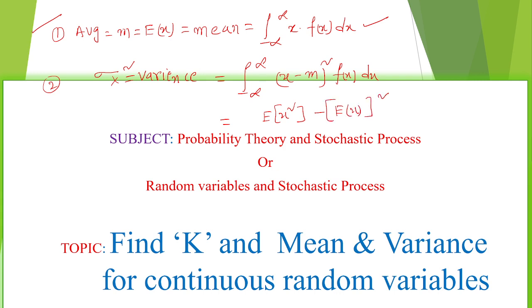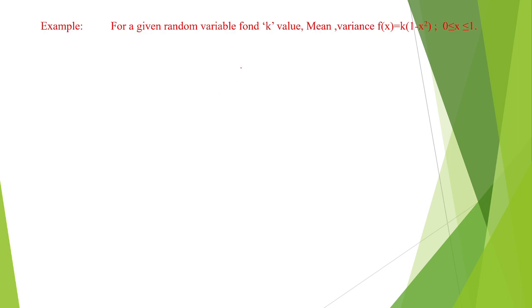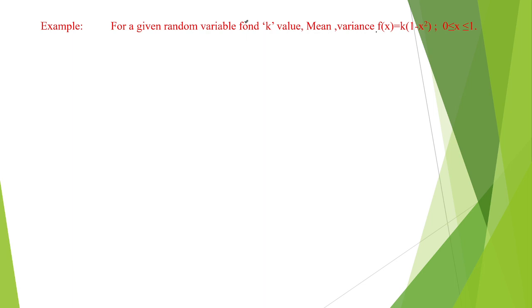To find the k value, we use the total density function equal to 1. We will go with one example: given a random variable, find the k value, mean, and variance, if the density function f of x equals k into (1 minus x squared) for limits 0 to 1.